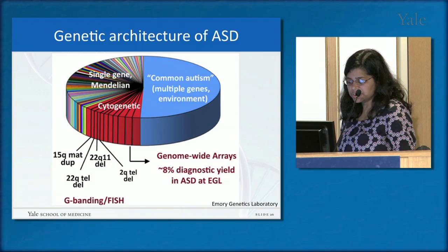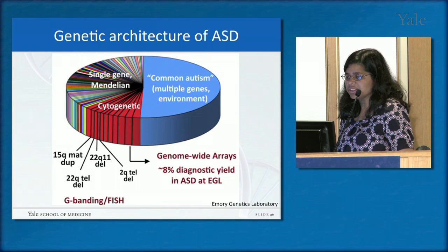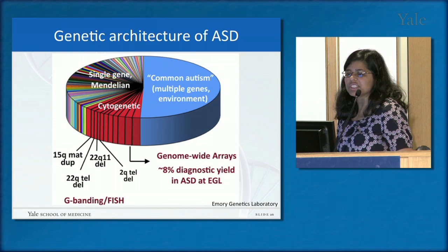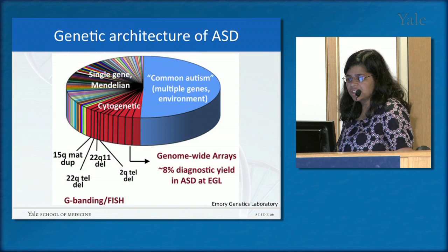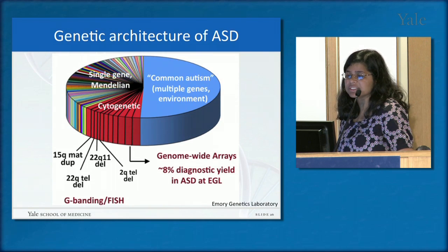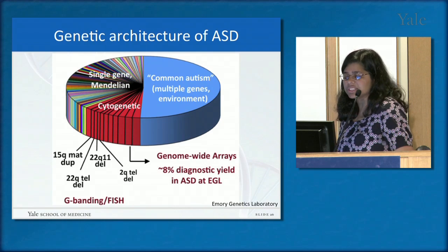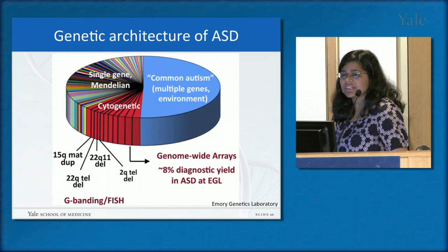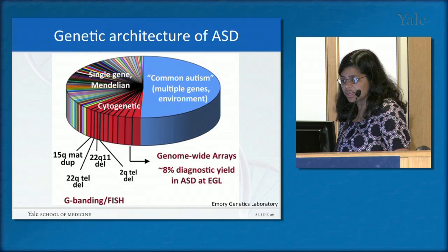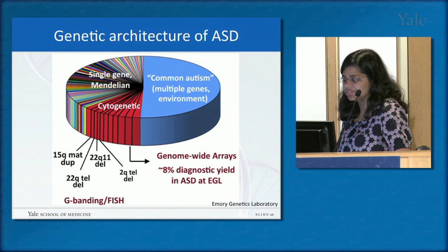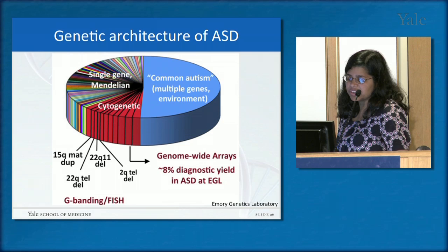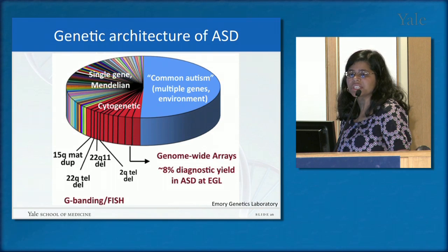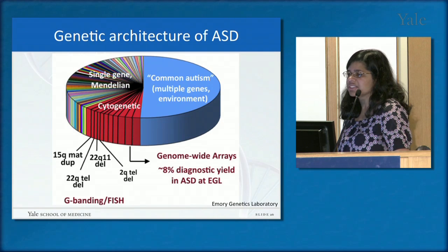The genetic architecture of autism shows that many different types of mutations and many different genes are involved. There is a chunk of cases due to common variants — found in at least 1% of the general population — each contributing a small amount of risk that together can create the phenotype. There are also single-gene Mendelian forms, especially those overlapping with genetic syndromes. And there are cytogenetic abnormalities, such as the 15q duplication. The key message is that many genes and many types of mutations are involved in autism.